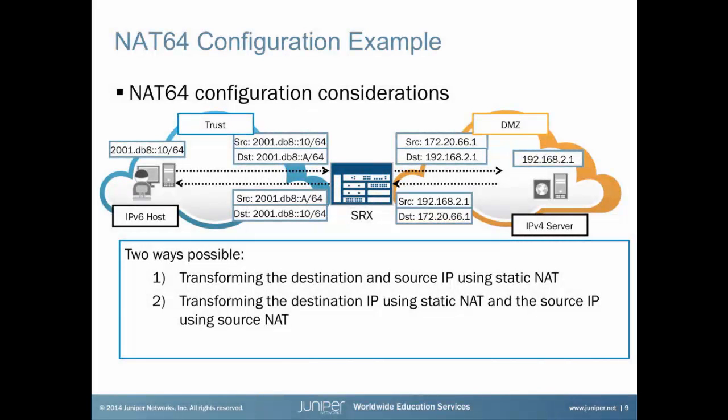So let's jump into a NAT64 configuration example. There are some considerations for how to configure our NAT64 setup, and there are two possible ways. First is transforming the destination and the source IP using static NAT configuration. Or the second way is transforming the destination IP using static NAT and the source IP using source NAT. I am going to move forward using the second way.